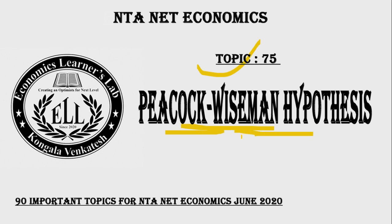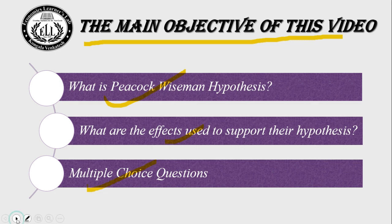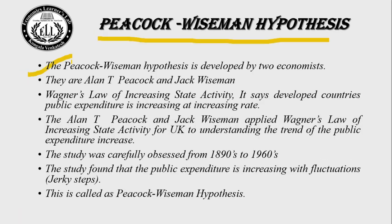The Peacock-Weisman Hypothesis is a very important topic for the Internet Economics exam — you can expect one question from it. The main objectives of this video are: to understand what is the Peacock-Weisman Hypothesis, what effects are used to support it, and then we will solve four multiple choice questions. The Peacock-Weisman Hypothesis was developed by two economists: L.N.T. Peacock and Jack Weisman. Wagner's Law of Increasing State Activity says that in developed countries, public expenditure is increasing at an increasing rate.